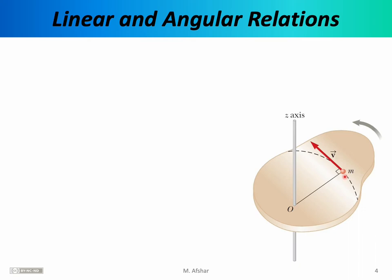That particular atom has some linear velocity — the velocity vector is tangent to the circular path. As the object rotates around point O, it has some angular velocity. The angular velocity vector points along the axis of rotation. To figure out whether omega points up or down, use the right-hand rule: place your wrist at point O, curl your four fingers in the direction of rotation, and stick out your thumb. In this case, your thumb on your right hand points upwards — that's the omega vector.